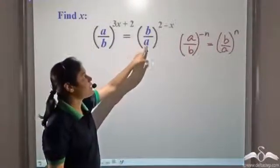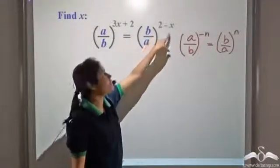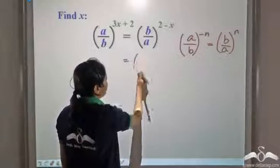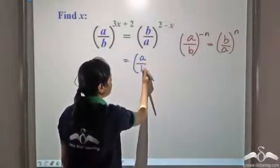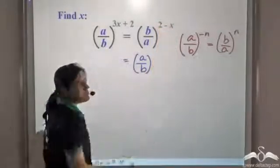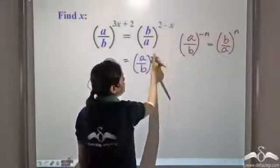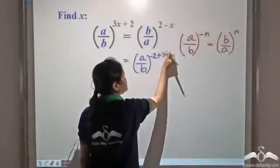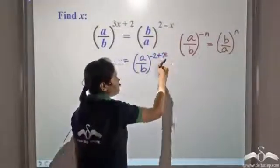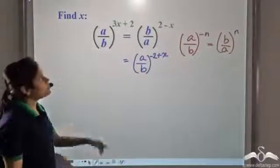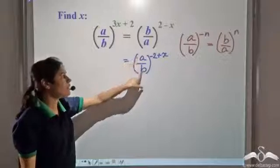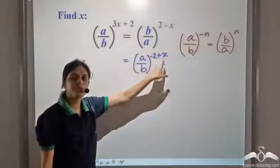Now we can make this b by a as a by b by changing the sign of the exponent. So I write this as a by b whole raised to the power negative of this. Now negative of this gives me negative 2 plus x because plus 2 becomes negative 2, negative x becomes plus x. So we have a by b to the power 3x plus 2 is equal to a by b to the power negative 2 plus x.